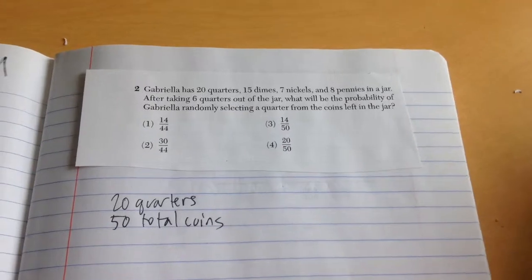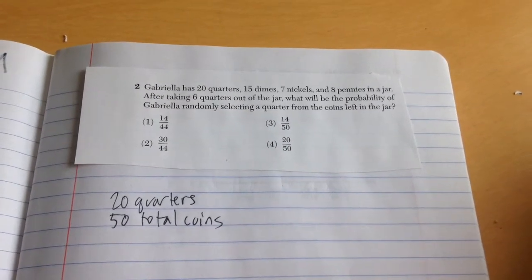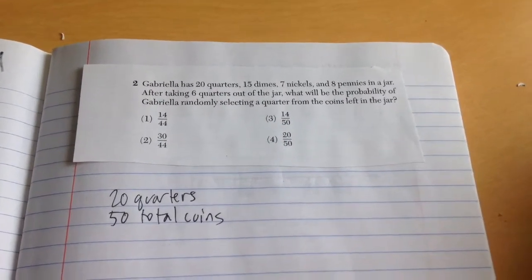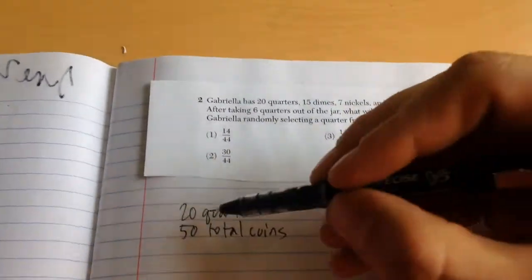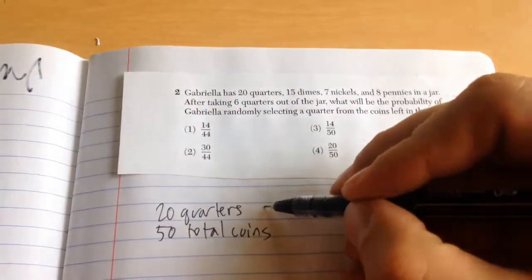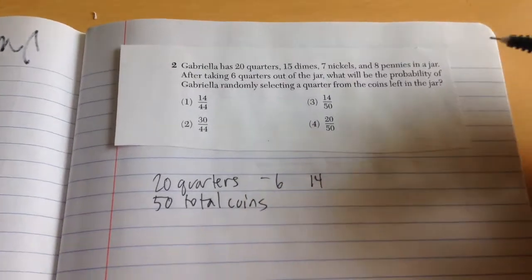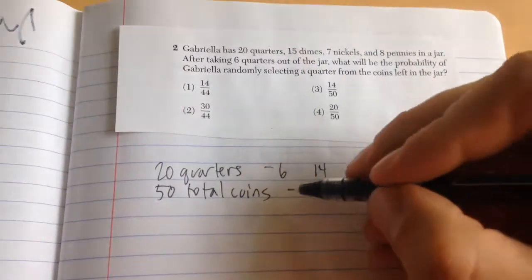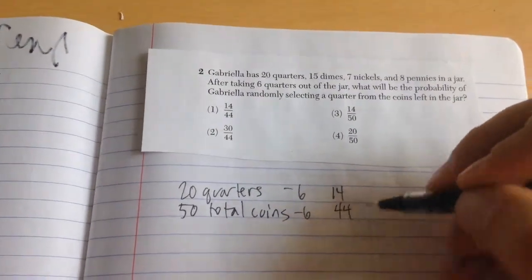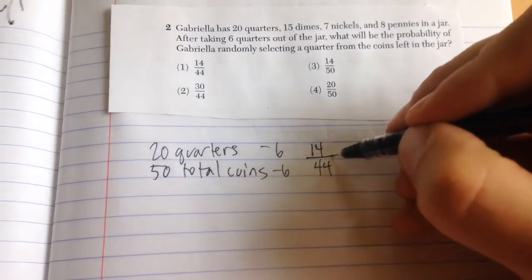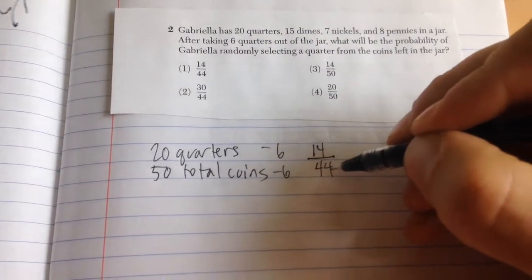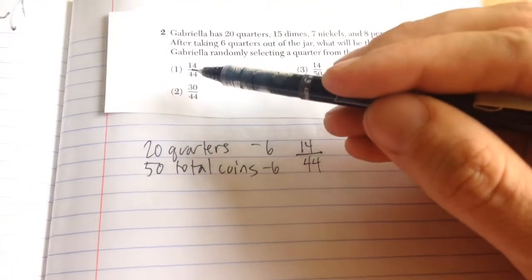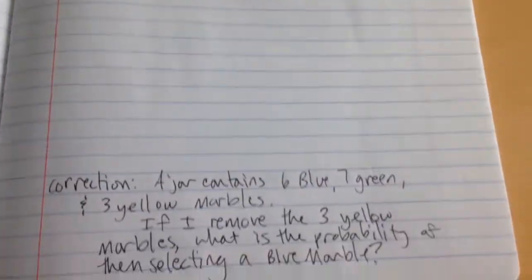Number 2, Gabriela has 20 quarters, 15 dimes, 7 nickels, and 8 pennies in a jar. After taking 6 quarters out of the jar, what's the probability? If she has 20 quarters and she takes 6 out, she now has 14. Because she took those 6 out of the jar, she now only has a total of 44. So there are 14 out of a possible 44 quarters in the jar. Choice number 1. For corrections.